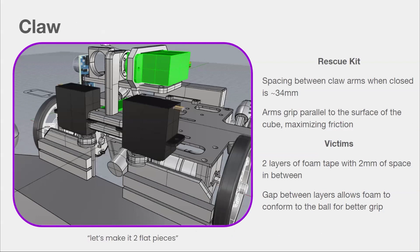Our claw has to pick up both the cuboid rescue kit and round victims. To pick up the rescue kit, we space the arms apart such that, accounting for compression in the foam, the arms grip parallel to the sides of the cube, maximizing friction. As for round victims, we have two layers of foam tape with some space in between, allowing the foam tape to compress and conform to the curved shape of the ball for better grip.